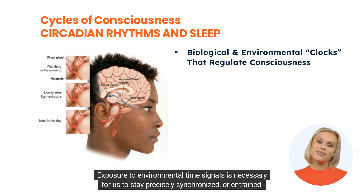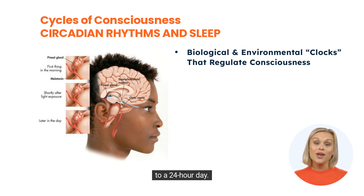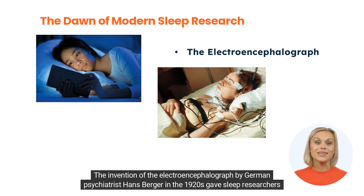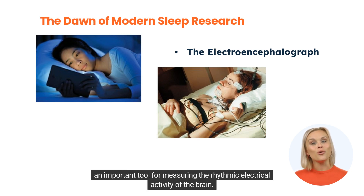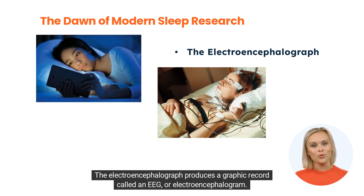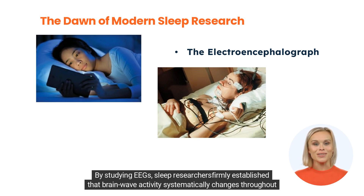Exposure to environmental time signals is necessary for us to stay precisely synchronized, or entrained, to a 24-hour day. The invention of the electroencephalograph by German psychiatrist Hans Berger in the 1920s gave sleep researchers an important tool for measuring the rhythmic electrical activity of the brain. These rhythmical patterns of electrical activity are referred to as brain waves. The electroencephalograph produces a graphic record called an EEG, or electroencephalogram. By studying EEG, sleep researchers firmly established that brain wave activity systematically changes throughout sleep.